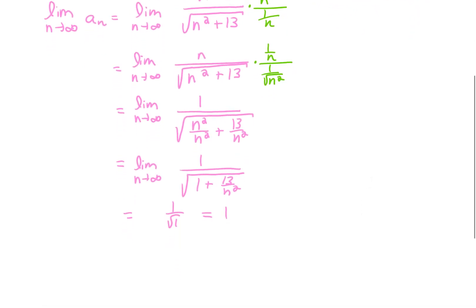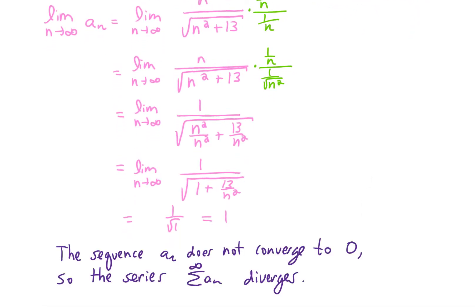What that tells us is that our sequence, a sub n, does not converge to zero, it actually converges to one. So the infinite series, the sum of a sub n, must diverge. That is often called the nth term test.